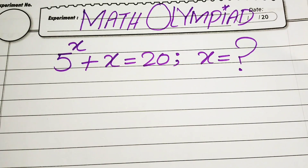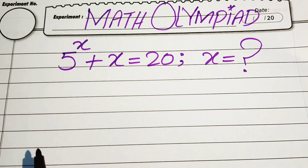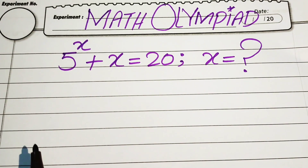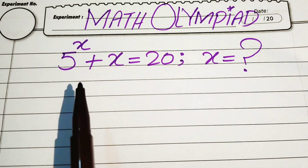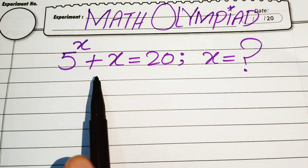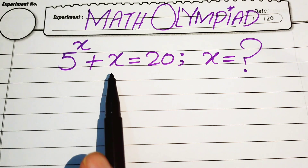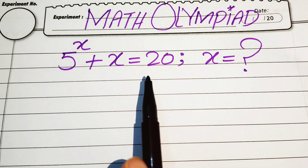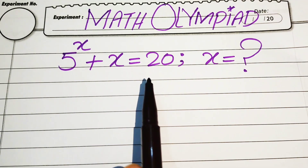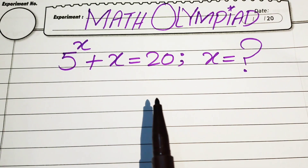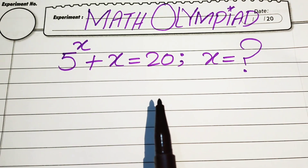Hello everyone, welcome. We are going to solve this math problem — a lumped exponential equation — where we have 5 to the power of x plus x equals 20, and we will solve this problem for the values of x.